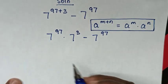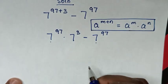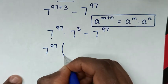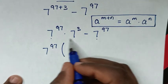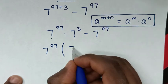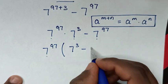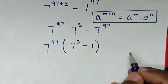Then in next step, here 7 power of 97 is common. So we'll take 7 power of 97 out of bracket, then this divided by this is this 7 power of 3, then minus this divided by this is 1 bracket.